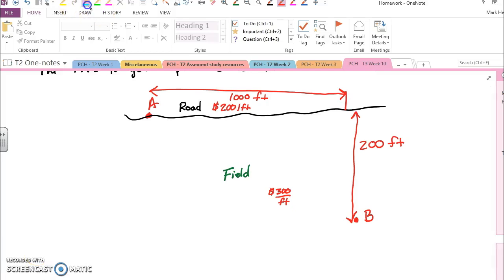So in this problem we've been asked to optimize the layout of a cable where we run part of the cable along the road and for that portion it costs us $200 per foot.